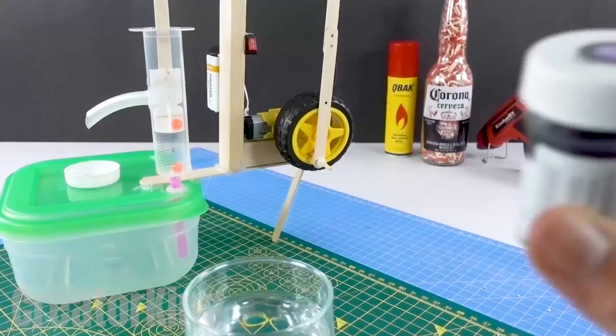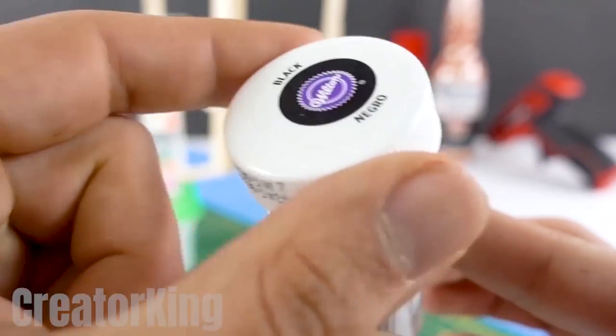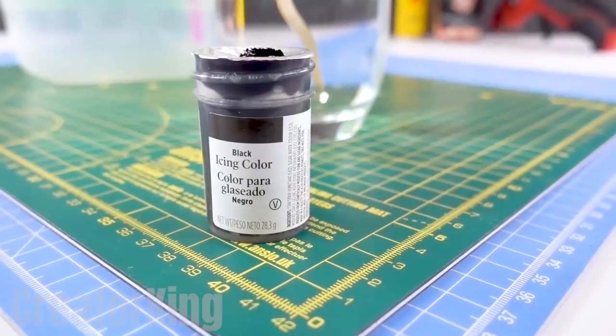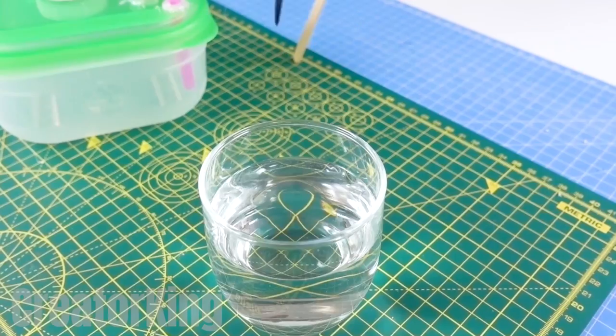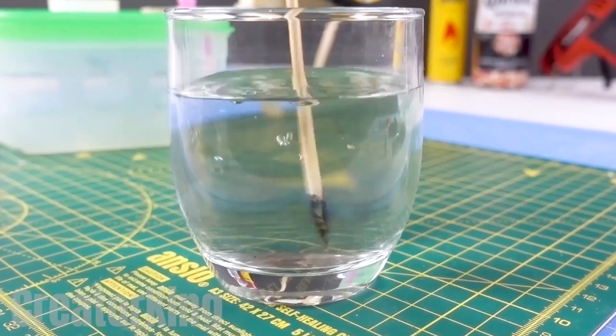Just mix a little water with food coloring. Very little will do. Mix it well and put it inside the container.